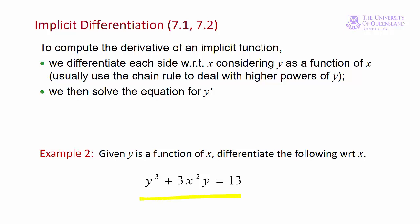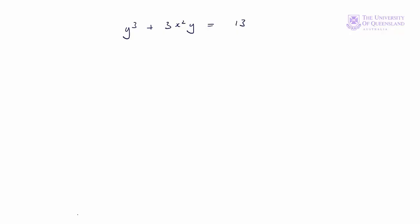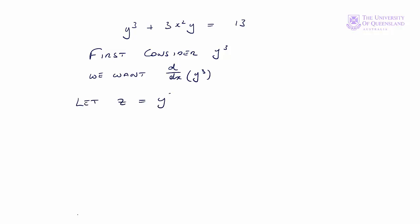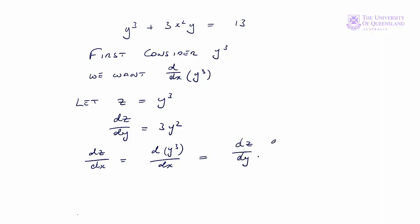Now let's differentiate a more complex implicit function. We'll differentiate each term in the equation separately and then put them all together. Starting with the first term, y³: we want d/dx of y³. This is where we use the chain rule. Let z = y³, so dz/dy = 3y². Then dz/dx = dz/dy · dy/dx = 3y² · dy/dx, which we write as 3y²·y′.